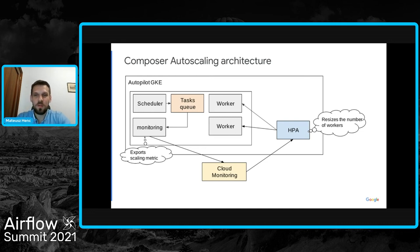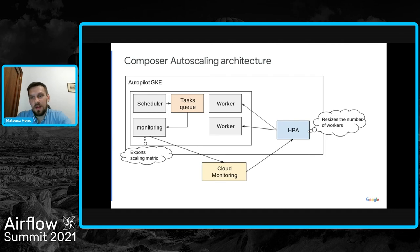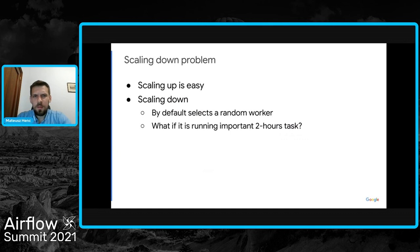HPA does not apply changes right away — we use a stabilization window of 70 seconds. We export the metric every 60 seconds and want to rely on two consecutive metric values before applying any change. We observed that the metric tends to fluctuate, for example when some tasks finish while the executor hasn't yet put new tasks in the queue. This also helps when a set of quick tasks can be handled by the current workers even though the queue may look long.